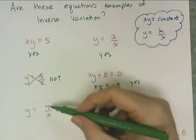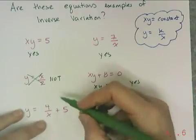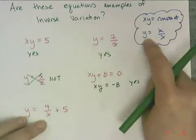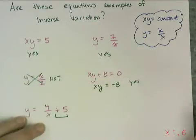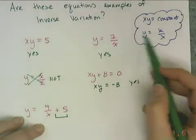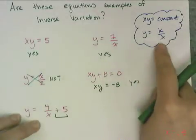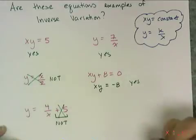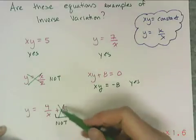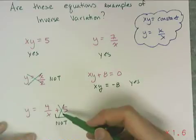The last example is y equals 4 over x plus 5. The 4 over x part is promising since it looks like y equals a constant over x, but what about the plus 5? There's no addition or subtraction in the standard form — it's just y equals a constant over x. That plus 5 makes it not an inverse variation. Just like direct variations, if a constant is added to the x or the y, it will not be an inverse variation.